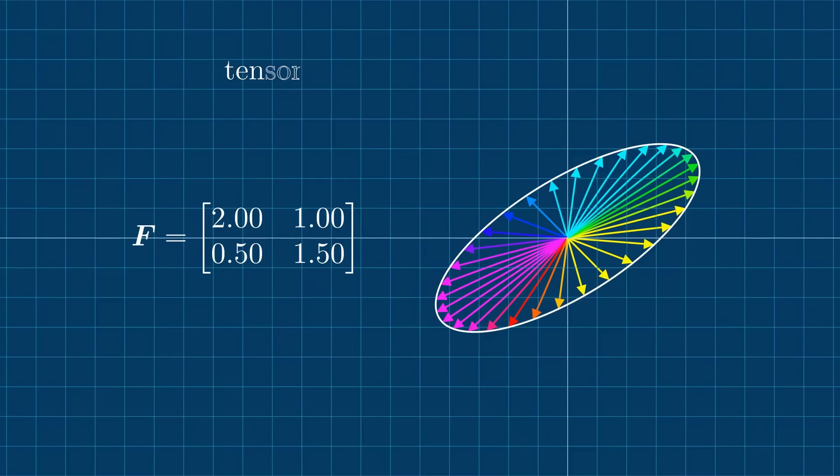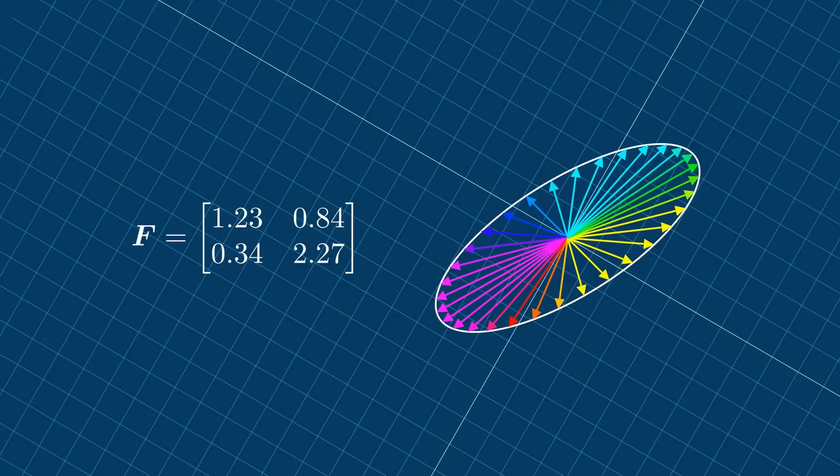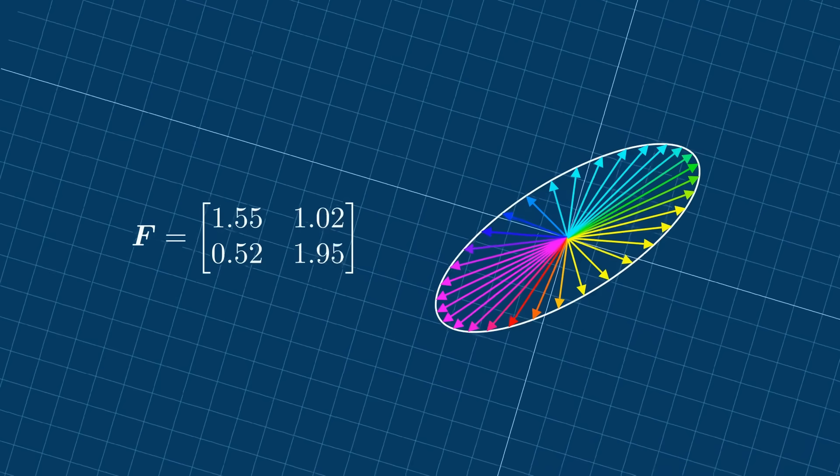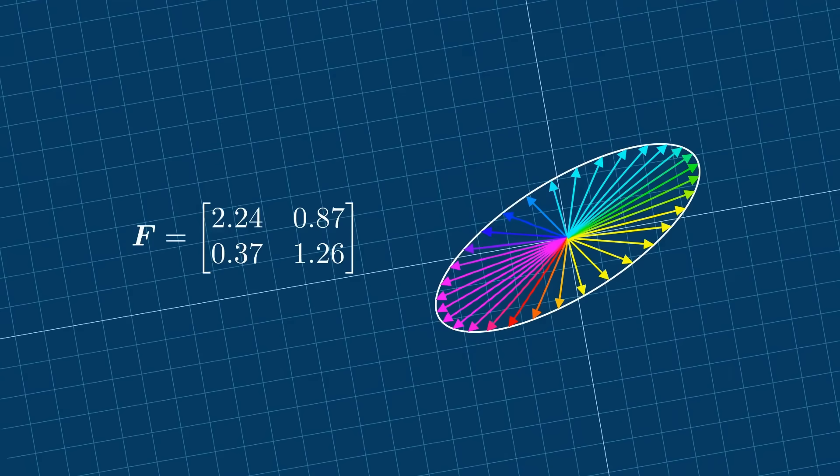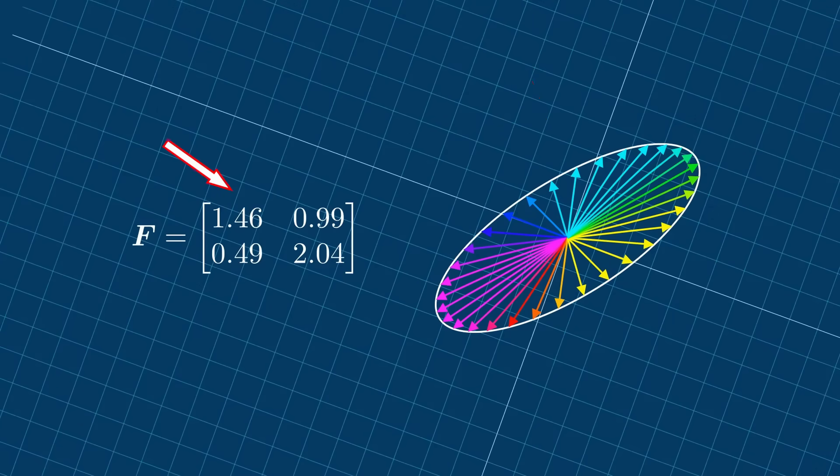As a side note, the word tensor comes from the Latin word tendere, which means to stretch. Now, what happens if we change the coordinate system? The stretch of the circle does not change, which means that our second-order tensor doesn't change. But the array of numbers describing the deformation in the particular coordinate system changes. And this is exactly why we say that matrices and tensors are not exactly the same. The tensor is an abstract mathematical object that describes the stretch of the circle independent of the coordinate system. And there are infinitely many matrices that can describe this deformation in specific coordinate systems.